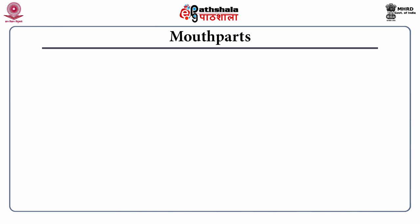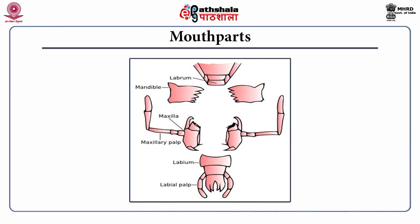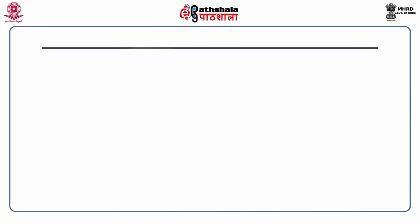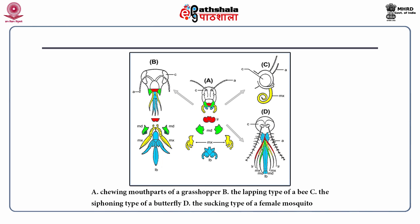The insect mouthparts include a labrum, a pair of mandibles, a pair of maxillae including maxillary palps, labium and labial palps. There are four major mouthpart modifications seen across insect orders: the chewing mouthparts of a grasshopper, the lapping type of a bee, the siphoning type of a butterfly, and the sucking type of a female mosquito.